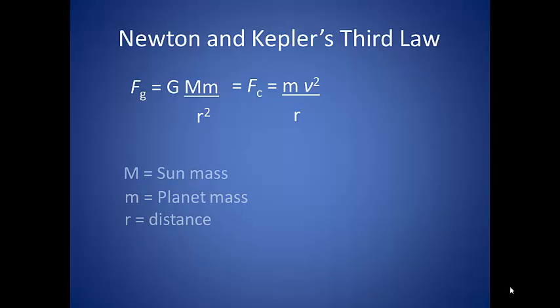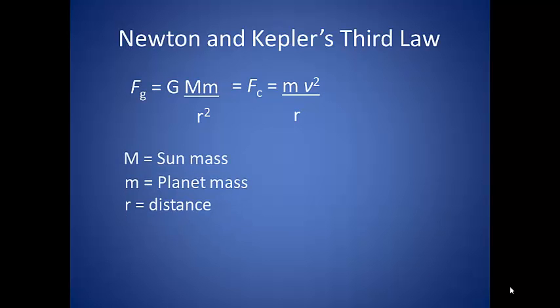Now on the left side of the equation, we need to define some terms a bit more clearly. So let's call capital M the mass of the sun and the lowercase m the mass of the planet. We also have the distance from our planet to its sun labeled as r.